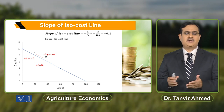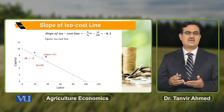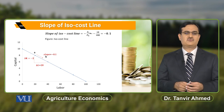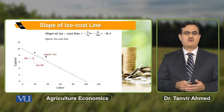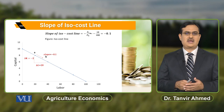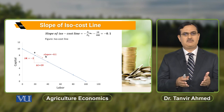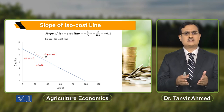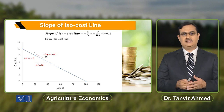यह isocost line different combinations of two inputs show करती है that a farmer can purchase by using the allocated amount of resources. हमारा objective है to compute the slope of isocost line between point A and point B.